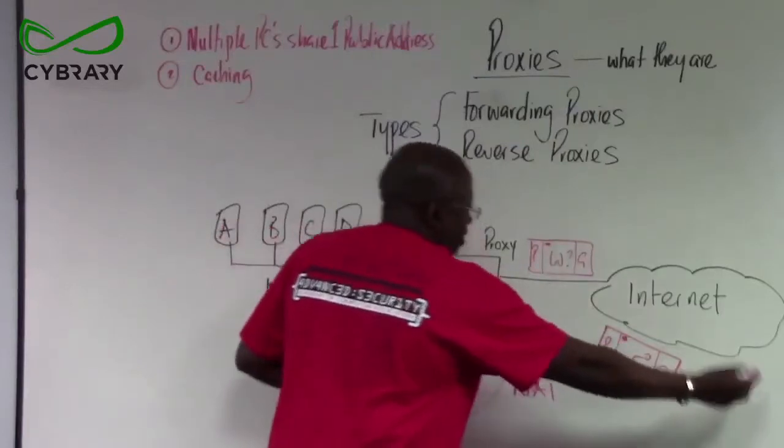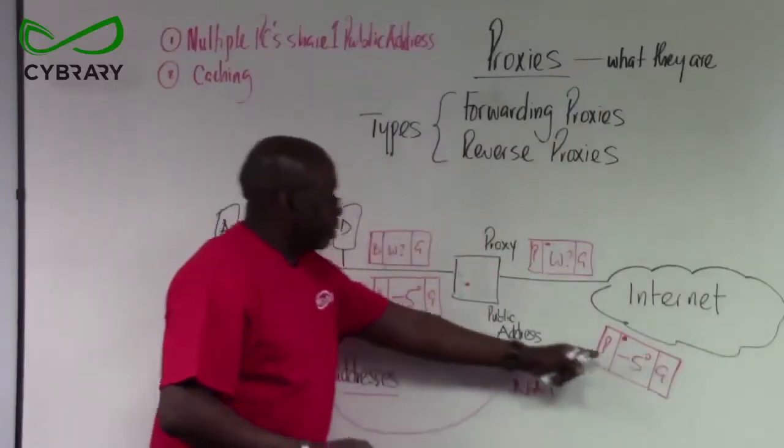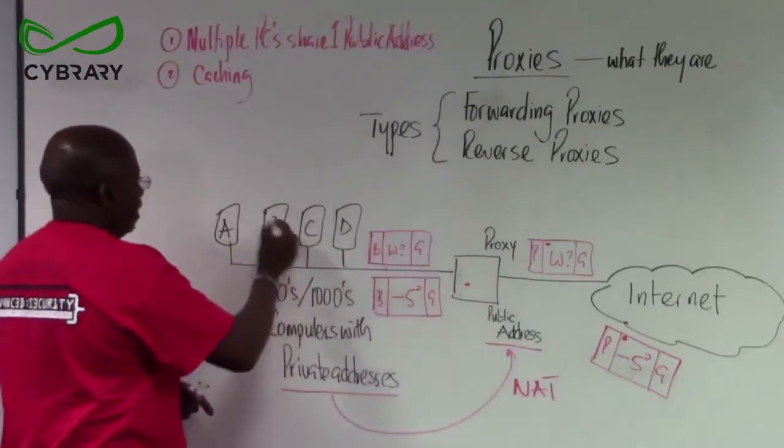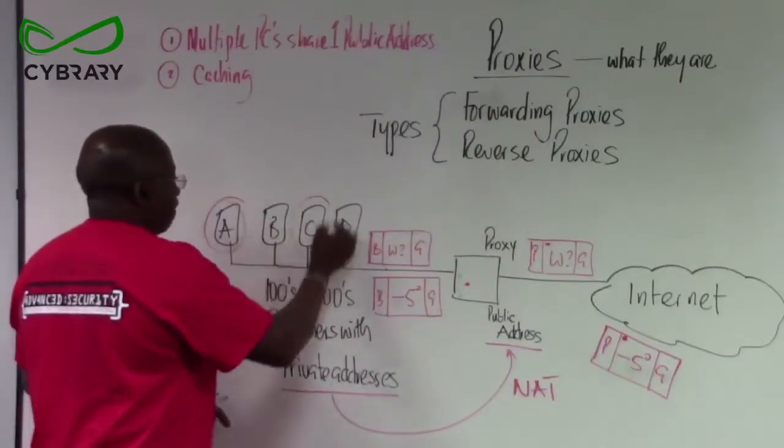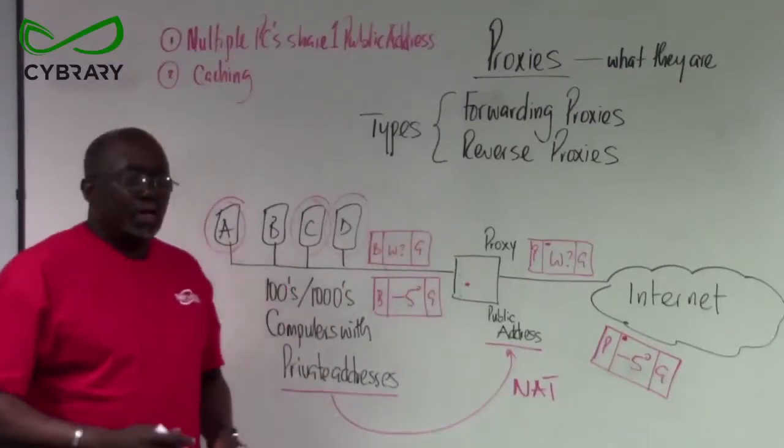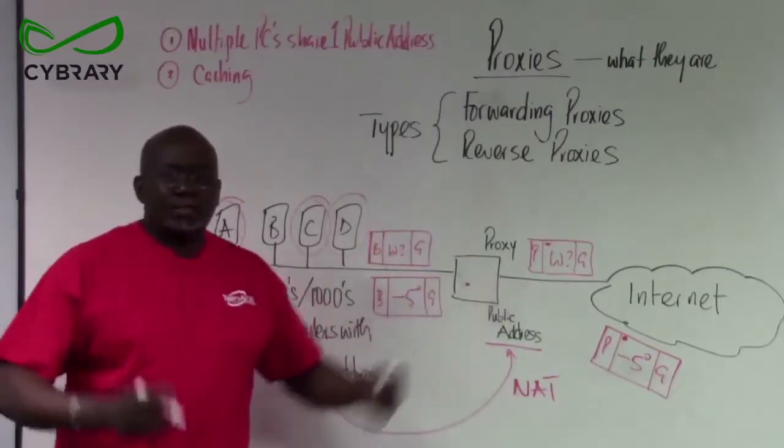So the proxy will go to Google and ask what is the weather, process the packet, send it back to computer B. If computers A, C, and D were also to ask for the same request. What is the weather tomorrow?